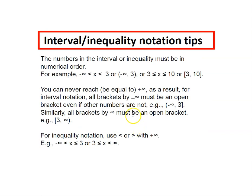Other notation tips are to remember that the numbers in the interval and the inequality must always be in numerical order. For example, -∞ < x < 3, or 3 ≤ x ≤ 10. The numbers have to be in numerical order from the number line, from left to right.